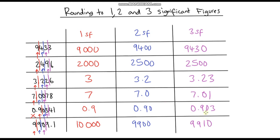Hopefully that was useful. The key thing to be aware of is that any leading zeros do not count as significant. If we've got zeros in between digits of a number, they are significant — but any leading zeros are not counted as significant. Thanks for watching.